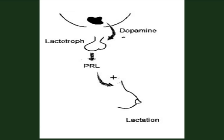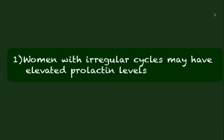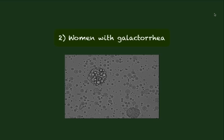Normal serum prolactin levels range from 5 to 20 nanograms per ml. When would it be appropriate to measure prolactin in one of your patients? The first indication would be in a woman with irregular menstrual cycles, since prolactin can be a primary cause for amenorrhea or irregular cycles. The second would be women who experience galactorrhea.